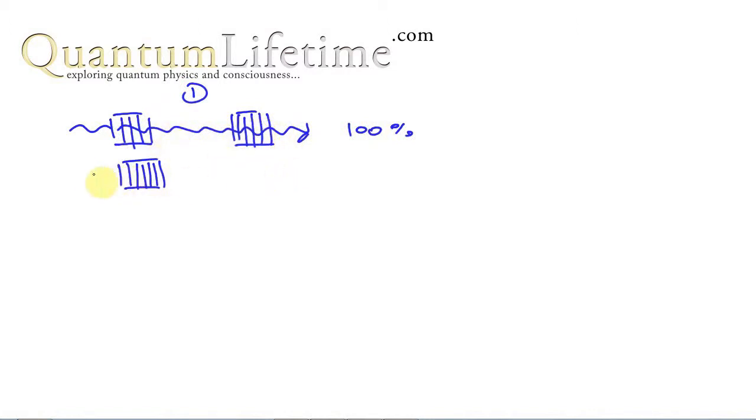Now if we pass light through a filter that's like this, and then we face it with a filter that's oriented at right angles, as we saw it stops there. We get 0% transmission.